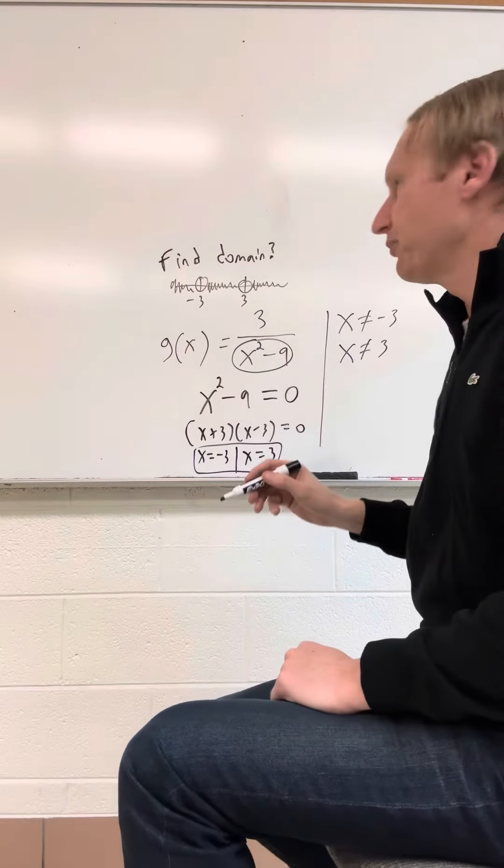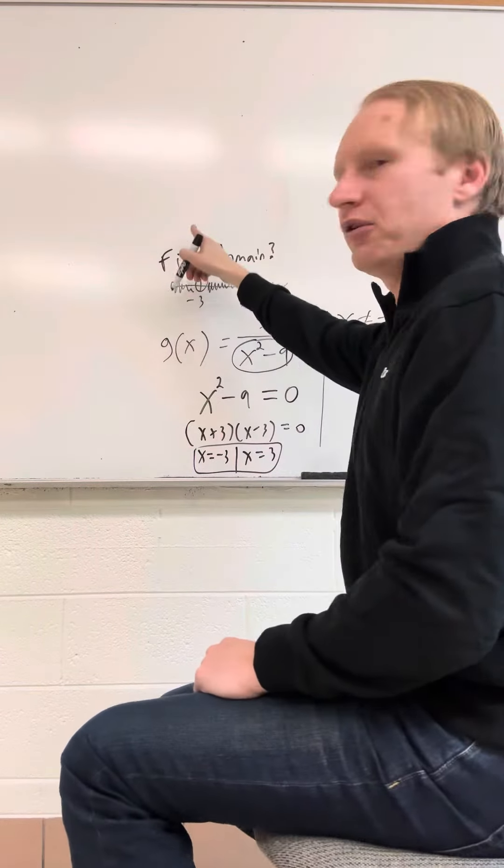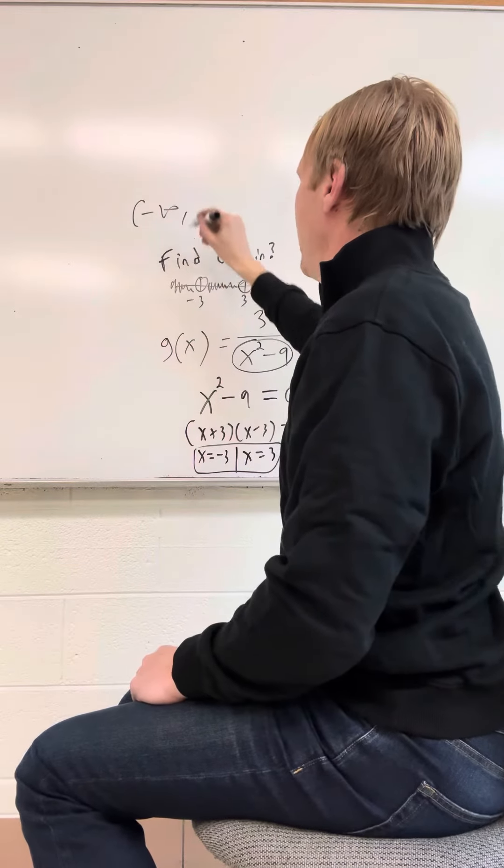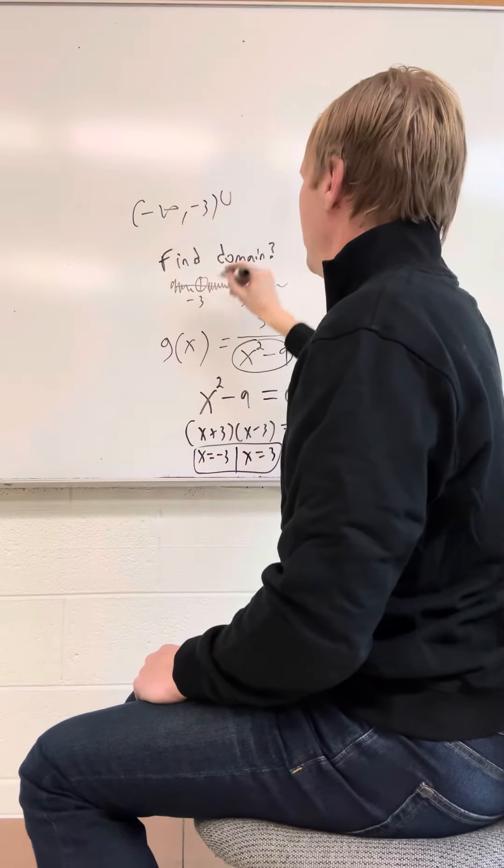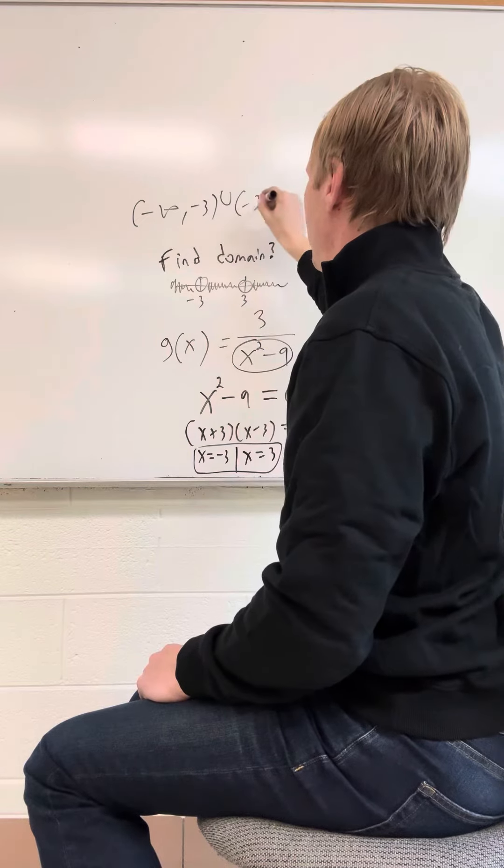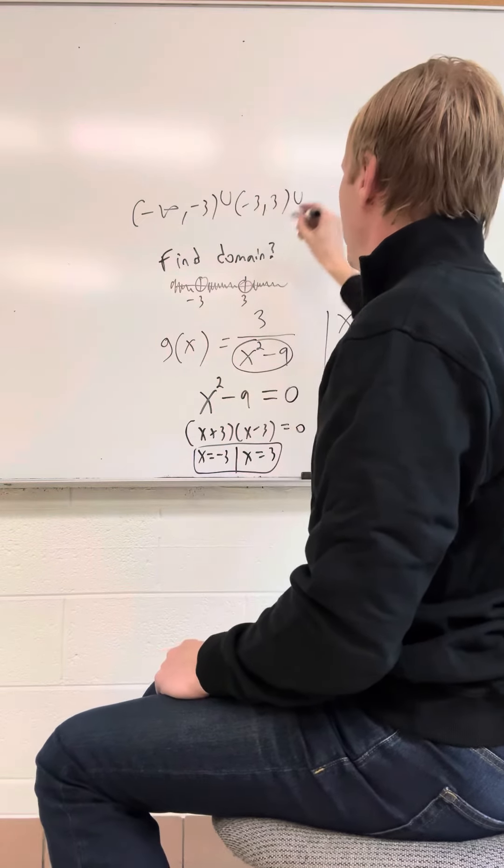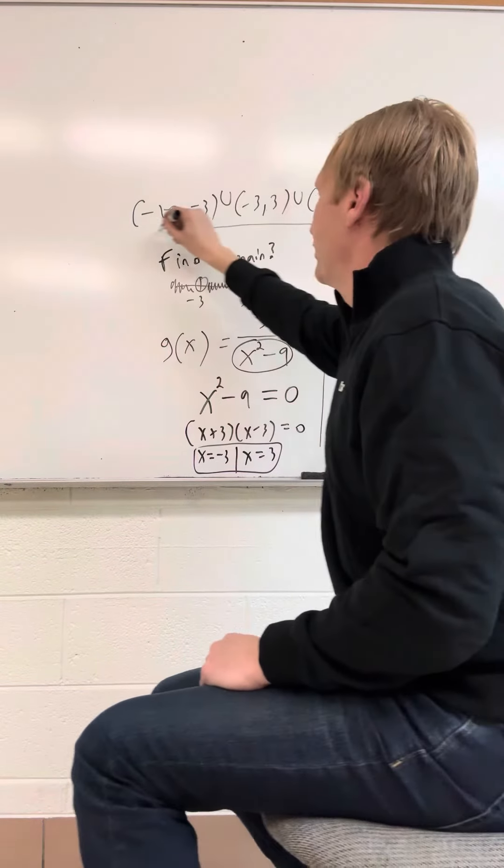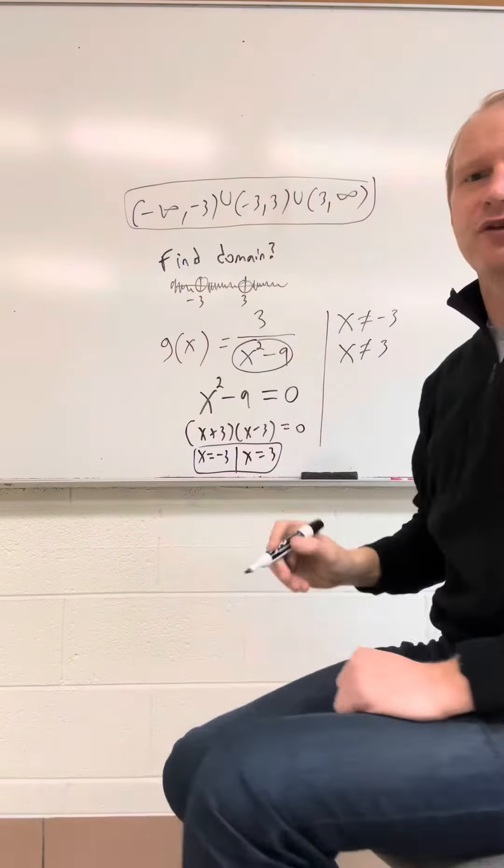So in interval notation, we would say, for the domain, I'm going to write it up here, we would say negative infinity to negative 3, union negative 3 to 3, union 3 to infinity, like that. That's how we would write our answer in interval notation for that one.